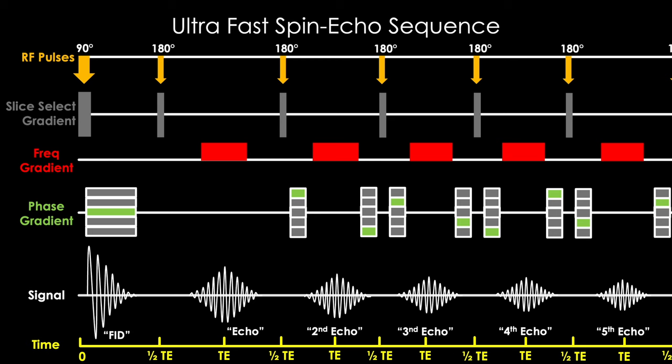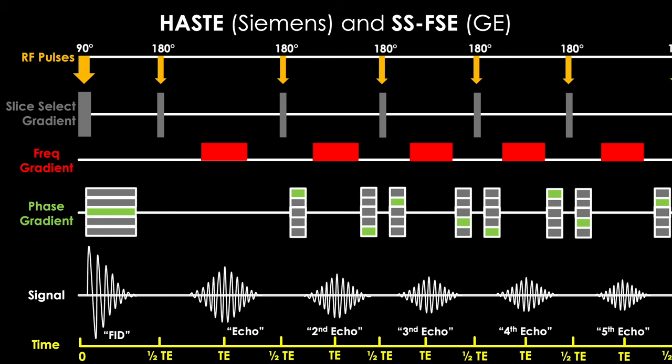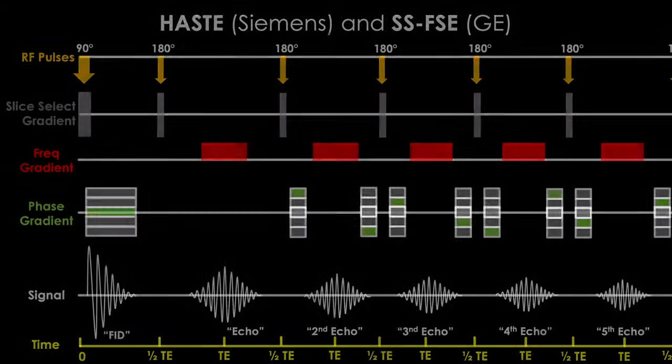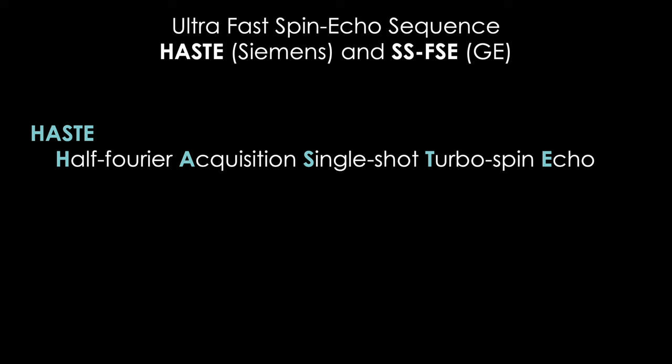Examples of these ultra fast spin echo techniques include the Haste and SSFSE sequences. Haste stands for Half Fourier Acquisition Single Shot Turbo Spin Echo. It's both fast in that it acquires all the data for an image in one cycle,